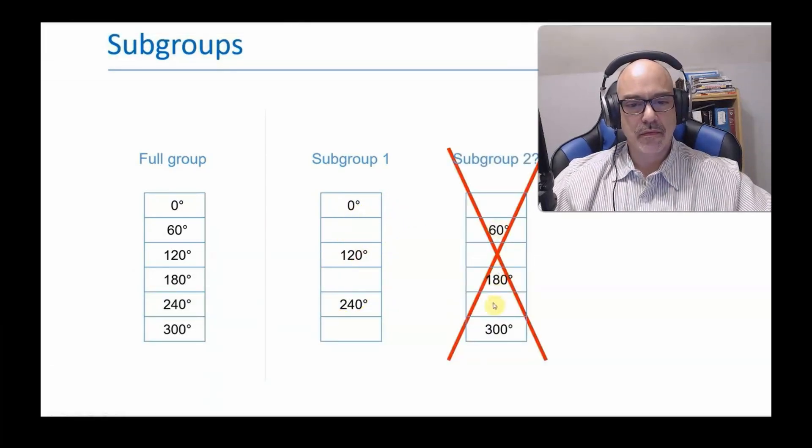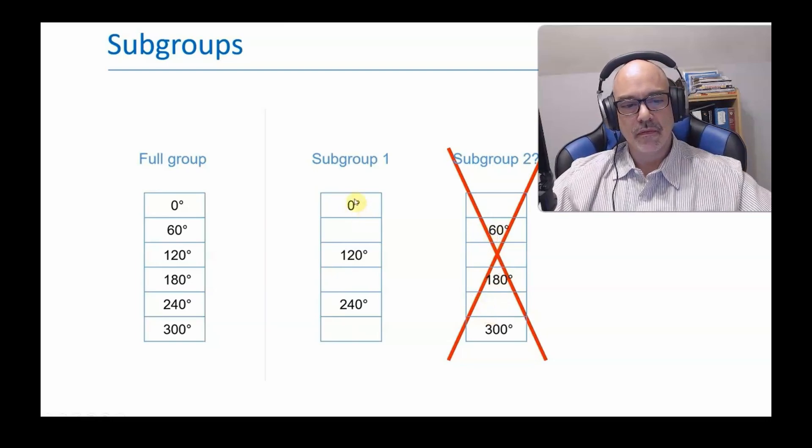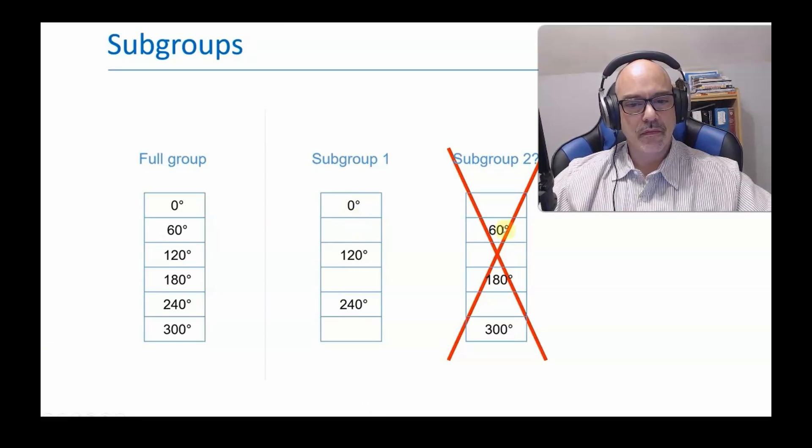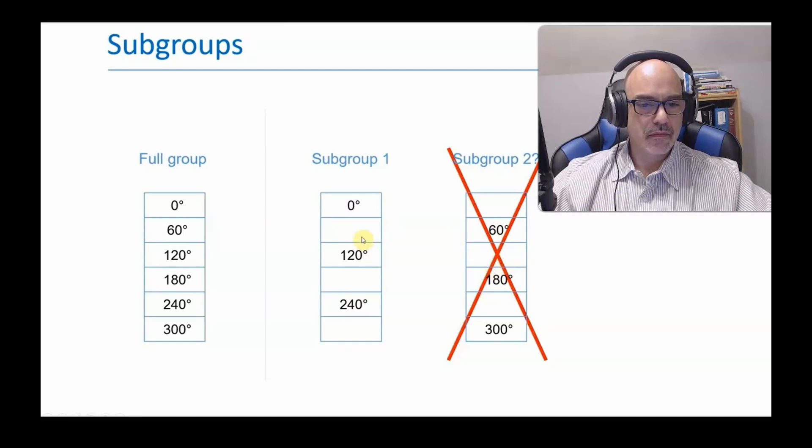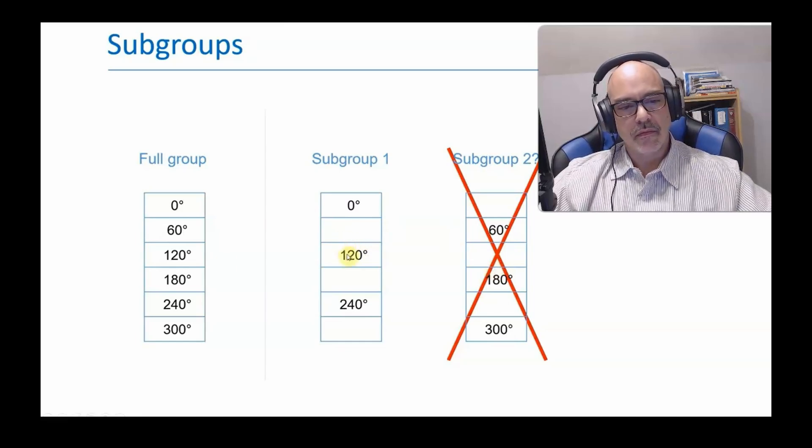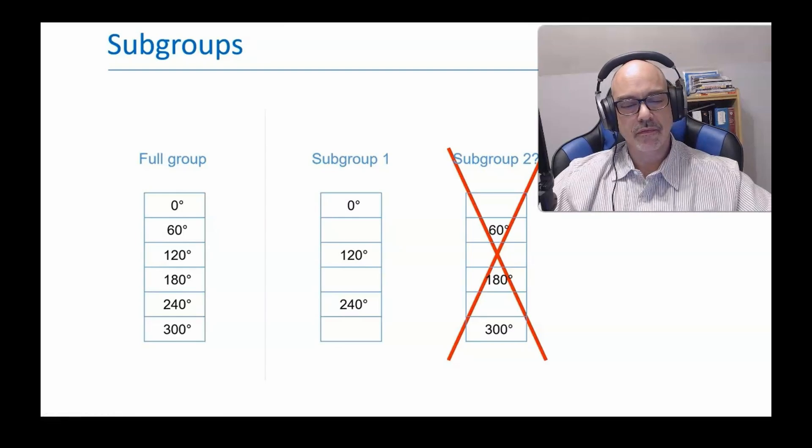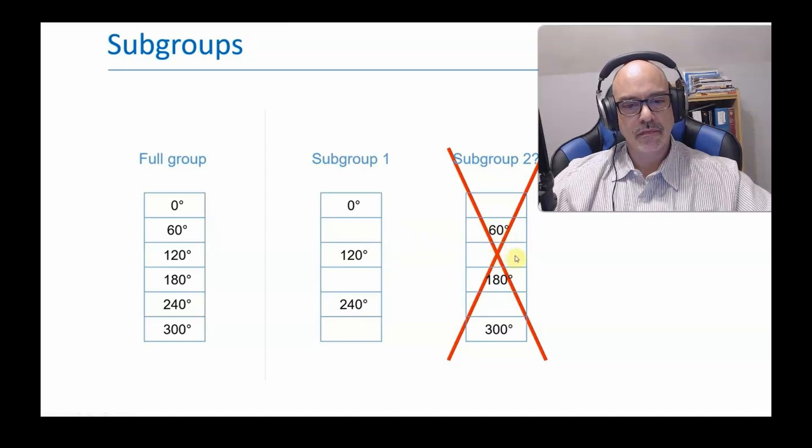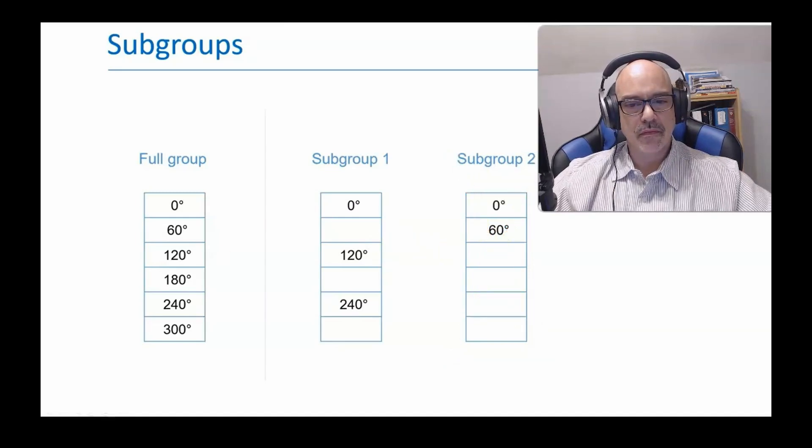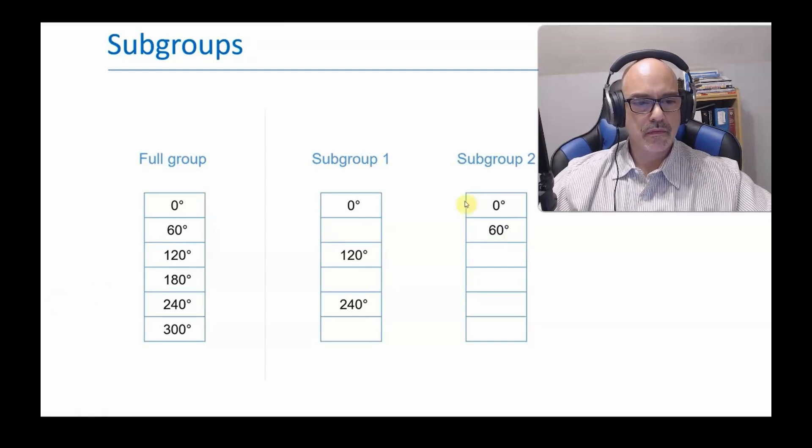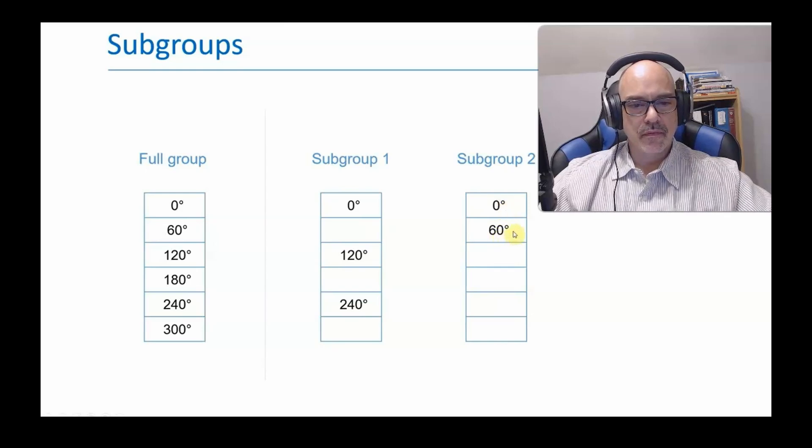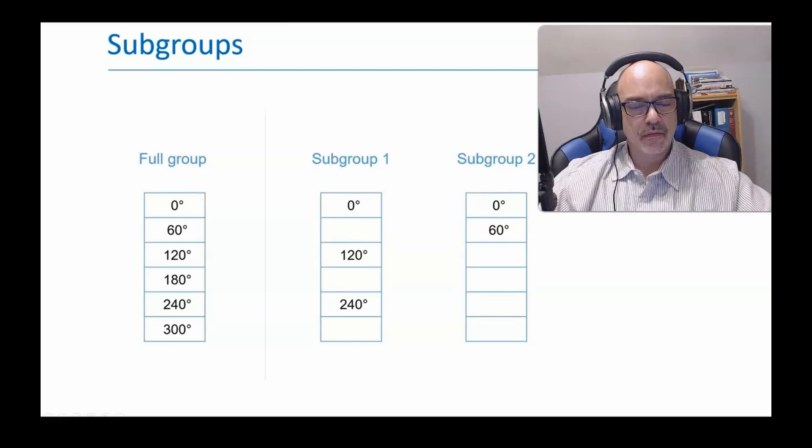This is not a subgroup. For one thing, it doesn't contain the identity element. Therefore, it's not a group. Therefore, it's not a subgroup. Rather, this is a coset of the subgroup 120. This lecture won't discuss cosets in any more detail. We are introducing this term only to show what a subgroup is not, and help you to avoid a very natural mistake. Here is the correct second subgroup. Its generator is a rotation by 60 degrees. But when it acts twice, it returns the triangle to the starting state. Therefore, it contains only the identity and 60 degree rotation.